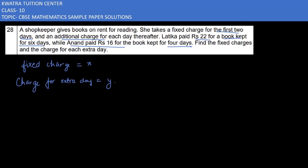Now using Latika's information to create an equation. They told me that Latika paid 22 for a book kept for six days. So x plus—she has six days total, we have to subtract two because those are the fixed days—so x plus 4y equals 22. That's equation one.